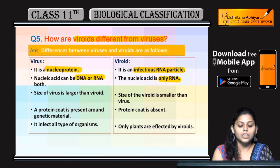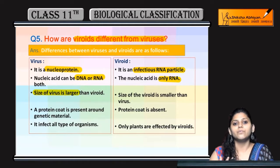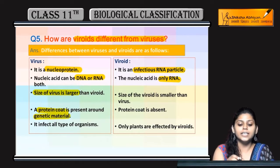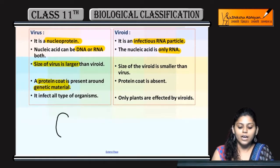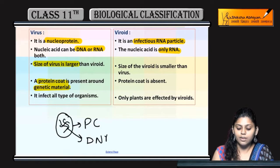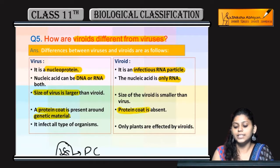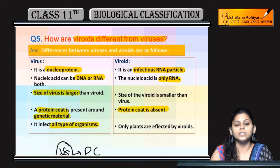Viroids are smaller compared to viruses. Viruses are made of nucleoproteins, so a protein coat is present around the genetic material — which can be DNA or RNA. In viroids, however, there is only nucleic acid and the protein coat is absent.